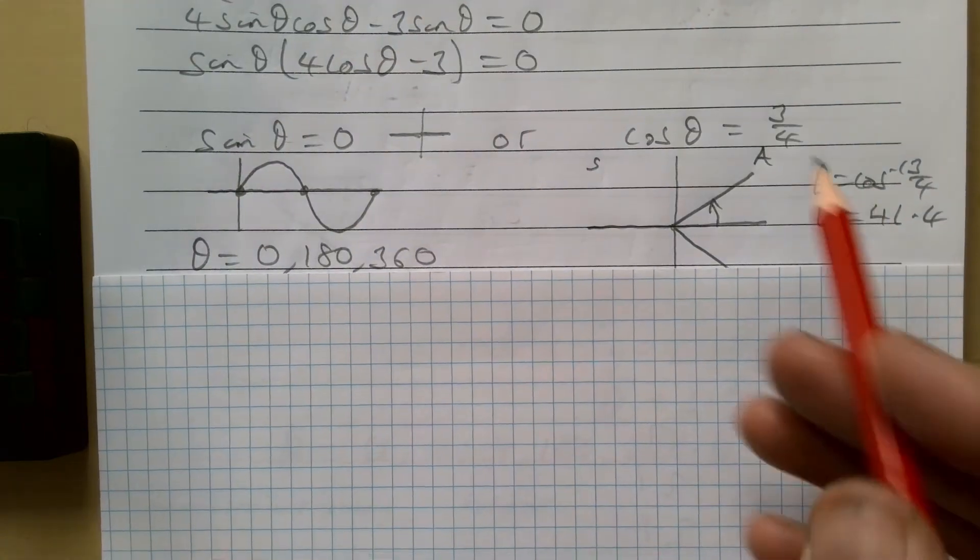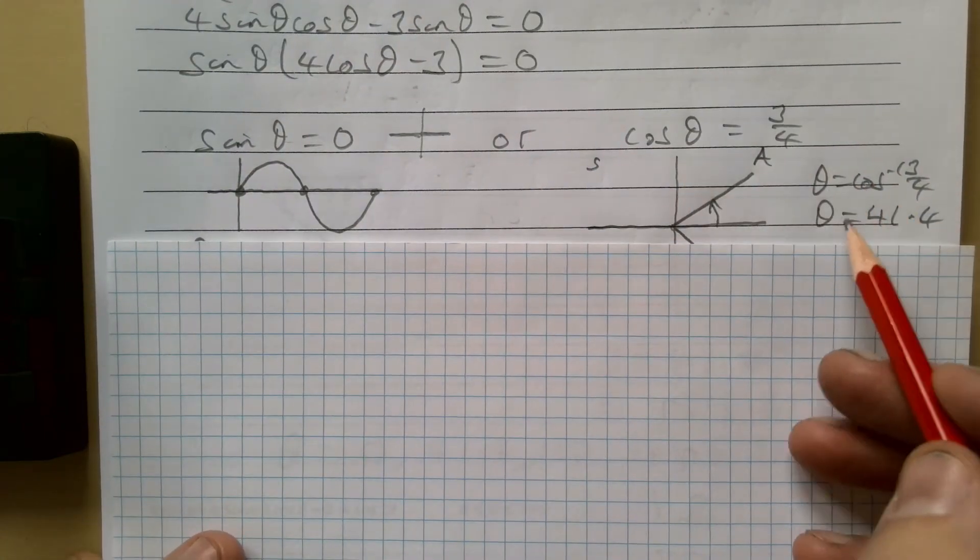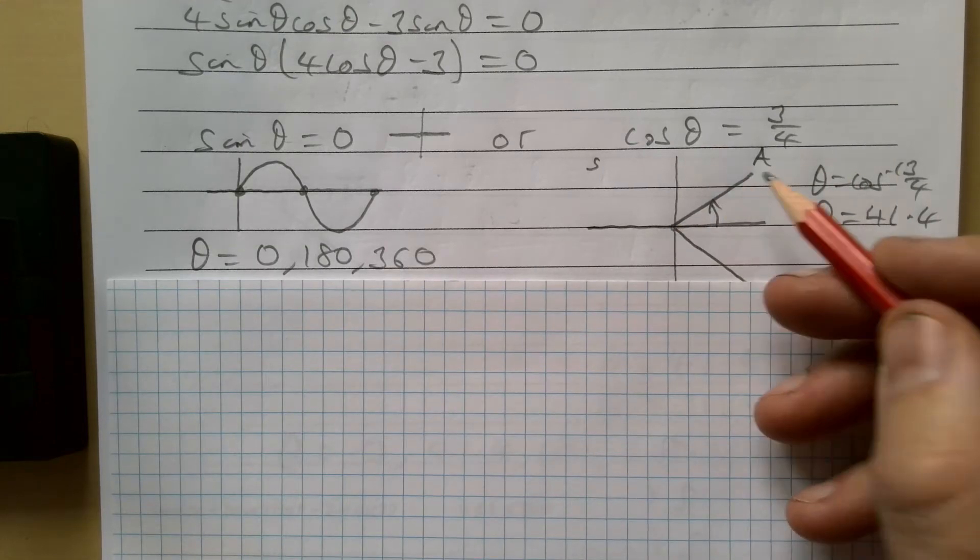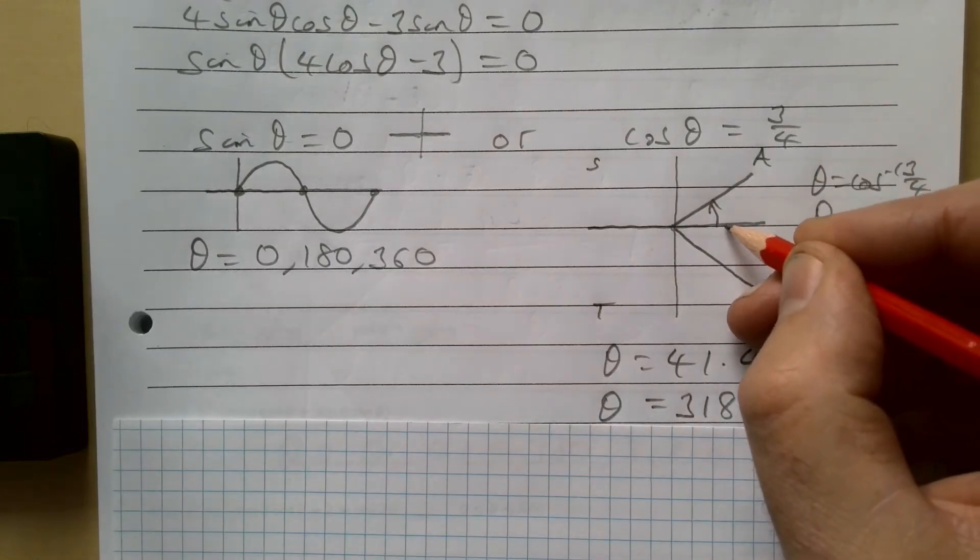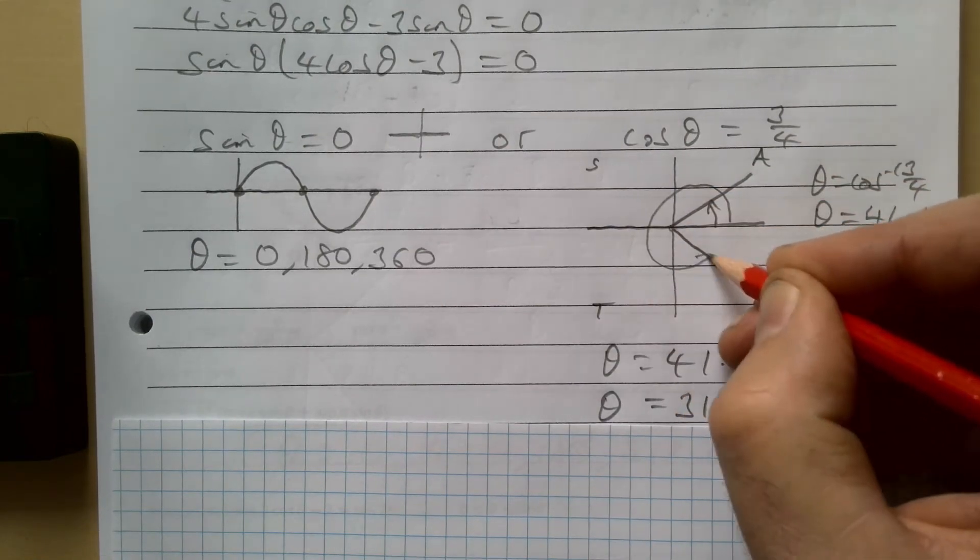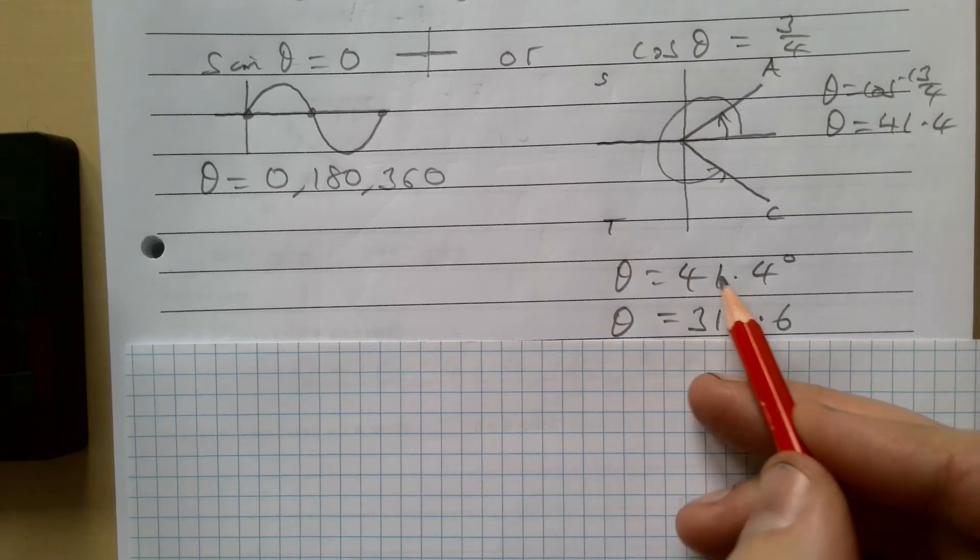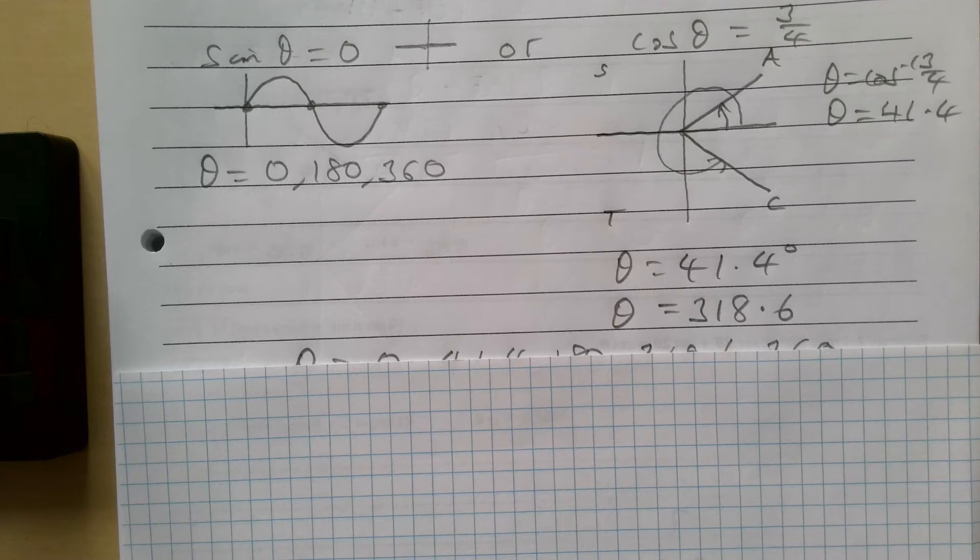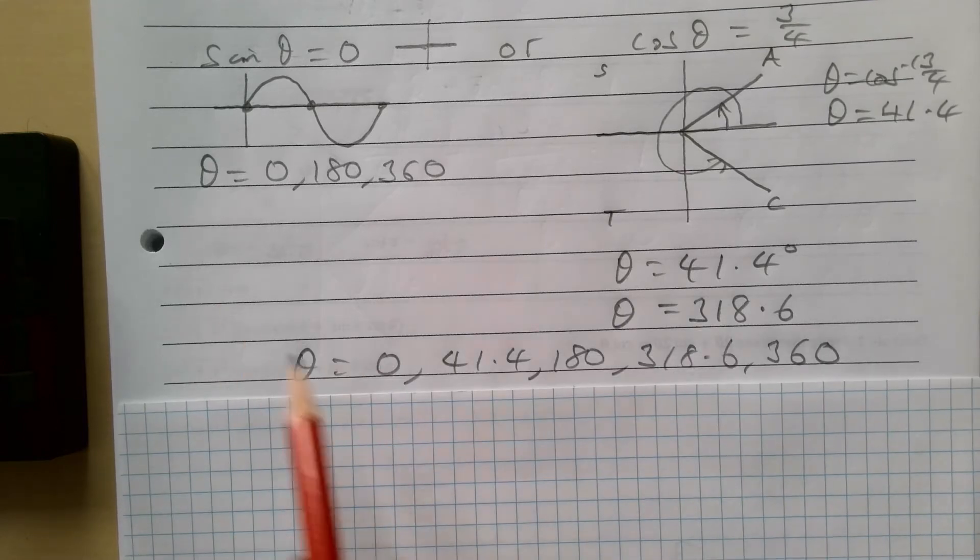For cos θ = 3/4, theta then is 41.4 degrees to three significant figures. So it's going to be here and where else is cos positive? We're going to be all the way around here. So my two ones then are 41.4 and 318.6. So my five possible solutions are zero, 41.4, 180, 318.6, and 360.